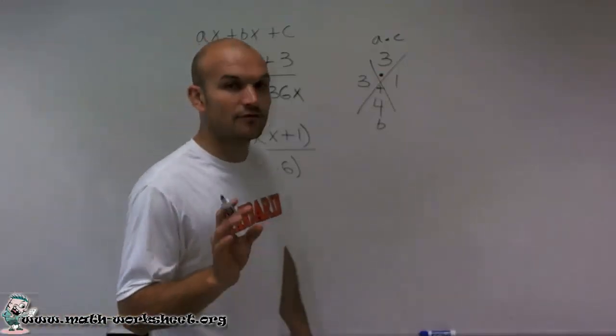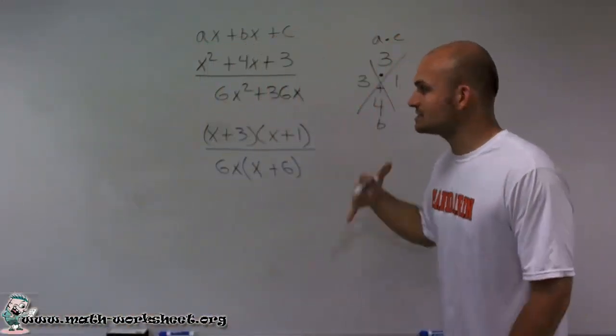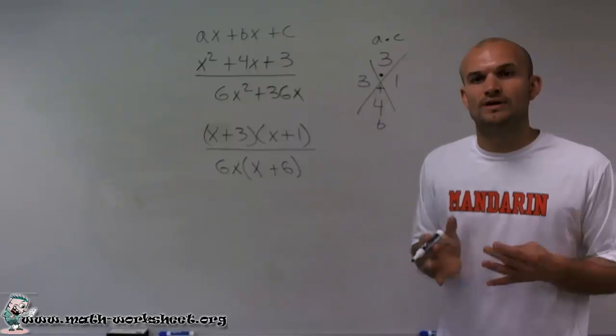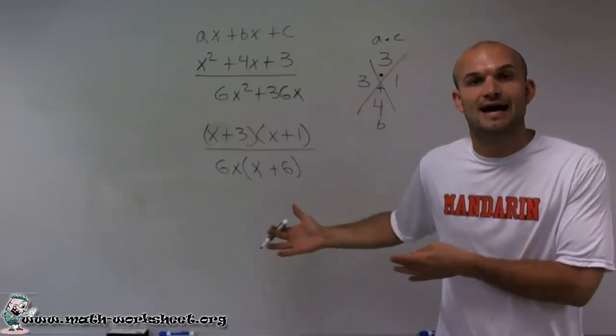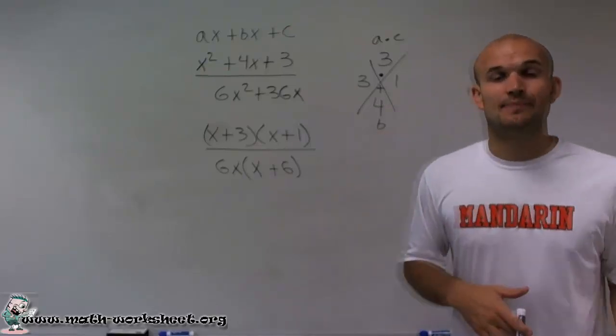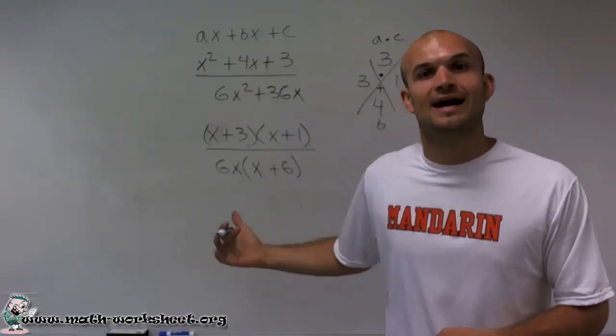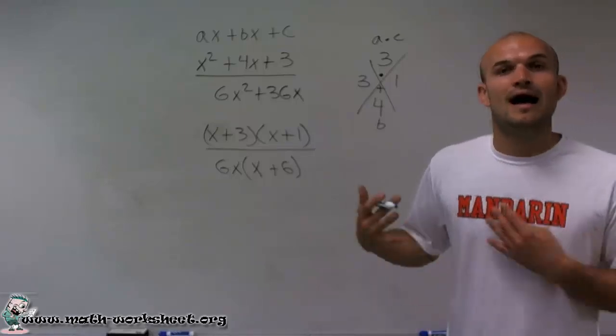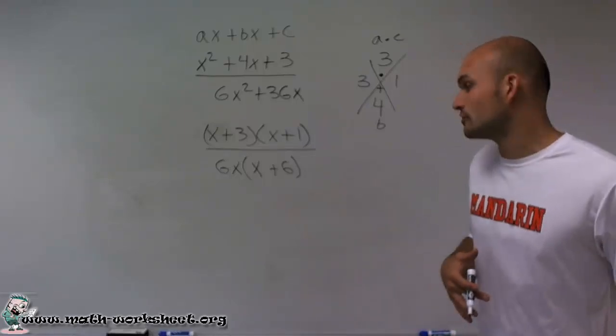But it's very important for us to note that when we're simplifying, we also need to understand which values to exclude of x. And why do we need to exclude them? Well, remember, we can't divide by 0. So any value of x that's going to make my denominator 0, I'm going to exclude from my simplified version of my answer.